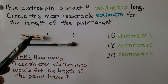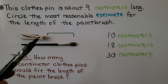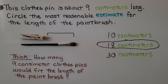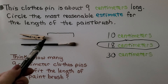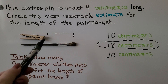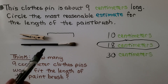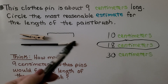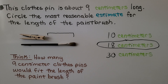If this is 9 centimeters, and 9 plus 9 equals 18, that would be our best estimate — it would be the most reasonable. Because 10 centimeters would just be one little centimeter longer than the clothespin, and 30 centimeters would be almost three clothespins. So 18 centimeters is the most reasonable estimate.